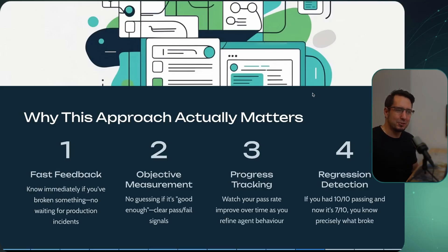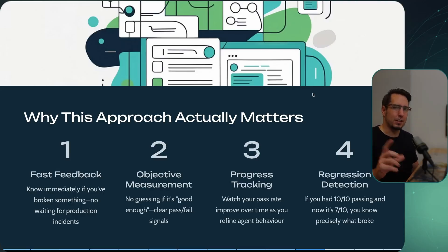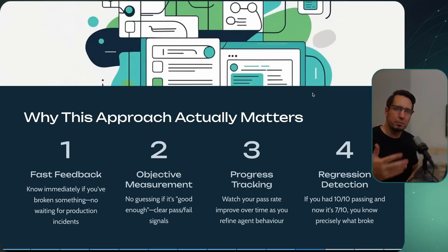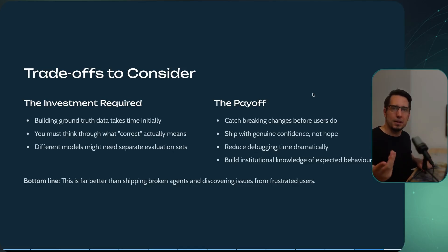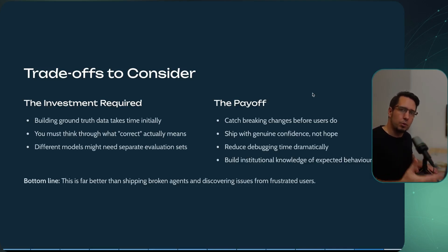Make sure you don't decrease your score — if you had 10 out of 10 core tests passing and now you've got 7, you should know what broke. With version control like Git you can see what the difference is. Think about this: building good ground truth test data takes time initially, but it really saves you time later on and lets you build agents you actually know are going to work for your specific test scenarios.